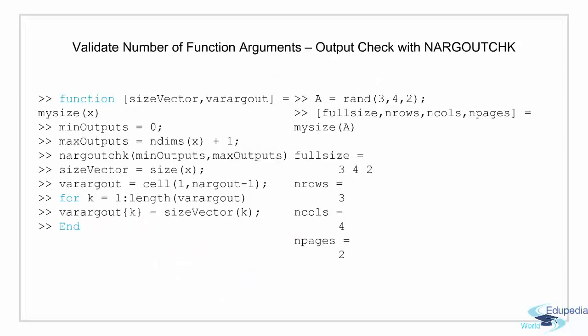Similar to narginchk for inputs, we have nargoutchk for outputs. Here we define the minimum number of outputs the user can ask for and the maximum number of outputs the user can ask for. In this example, the minimum is zero and the maximum is dynamic, depending on the dimension of the array x that is passed. So if we pass a three-dimensional matrix, we get at most four outputs. This is demonstrated here where we create a three-dimensional random array A and request four outputs — the full size, number of rows, number of columns, and number of pages.